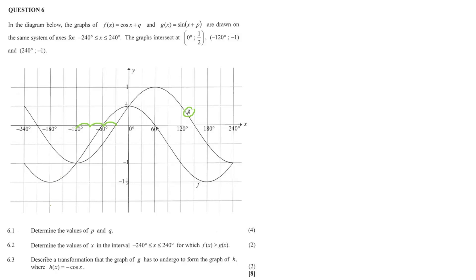Let me correct my mistake — from negative 30, it would need to shift 60 degrees: that's 30 degrees, then 60 degrees, so it would shift to negative 90. g(x) is currently at sin(x + 30). If it shifts another 60 degrees — another positive shift — it becomes sin(x + 90).